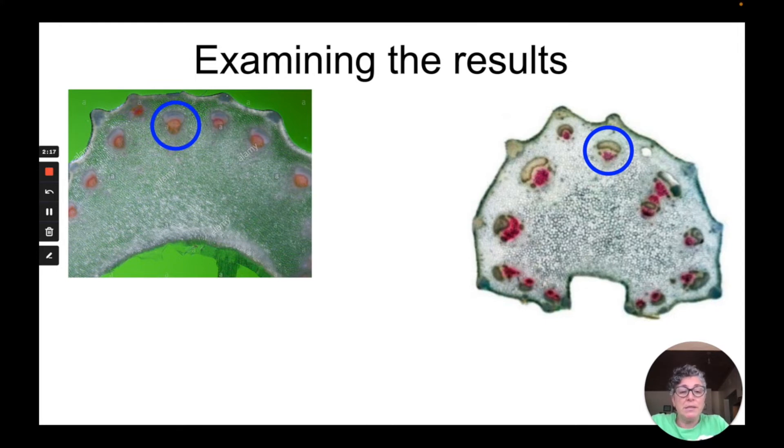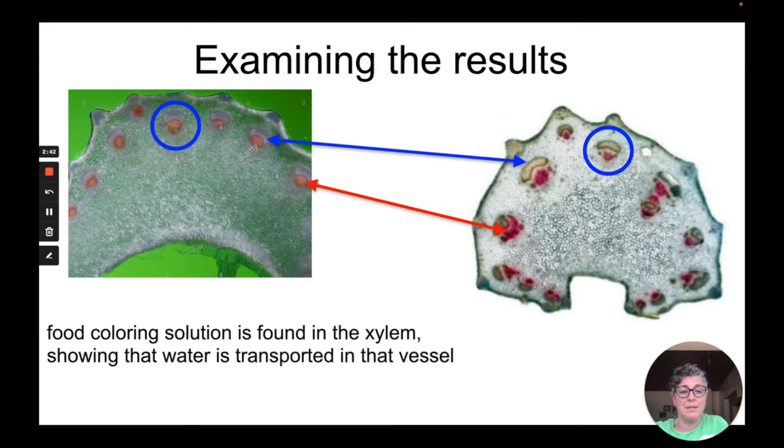We know that the vascular bundle in the stem contains xylem and phloem. Remember the phloem is towards the epidermal layer and the xylem is towards the center portion of the stem. We can see that the phloem does not have any dye in it whereas the xylem does. The food coloring solution is found in the xylem, showing that water is transported in that vessel.